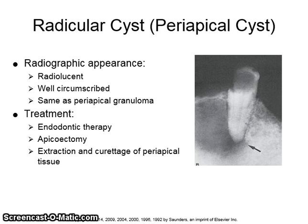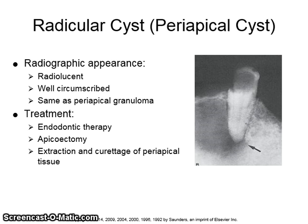The radiographic appearance is radiolucent and well-circumscribed, and looks very much the same as a periapical granuloma. Treatment would include endodontic therapy, apicoectomy, or extraction and curettage of the periapical tissue.